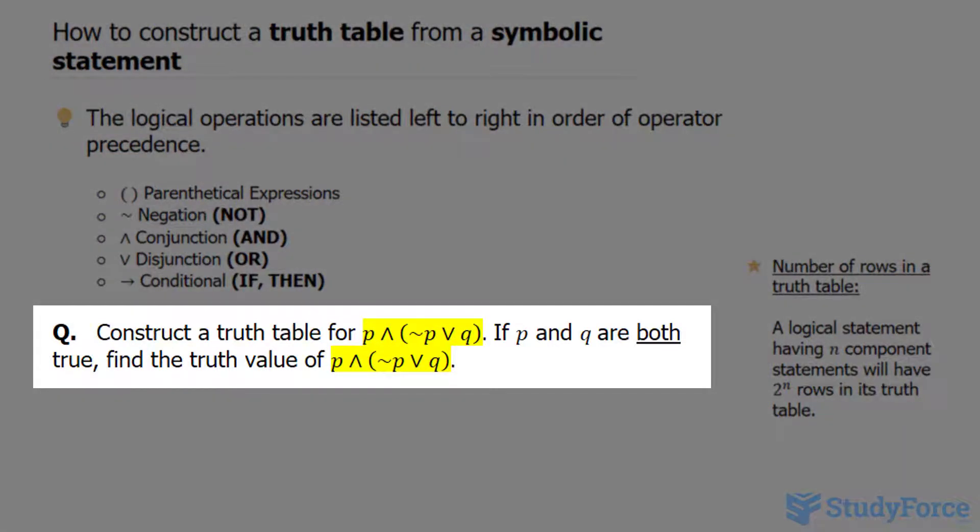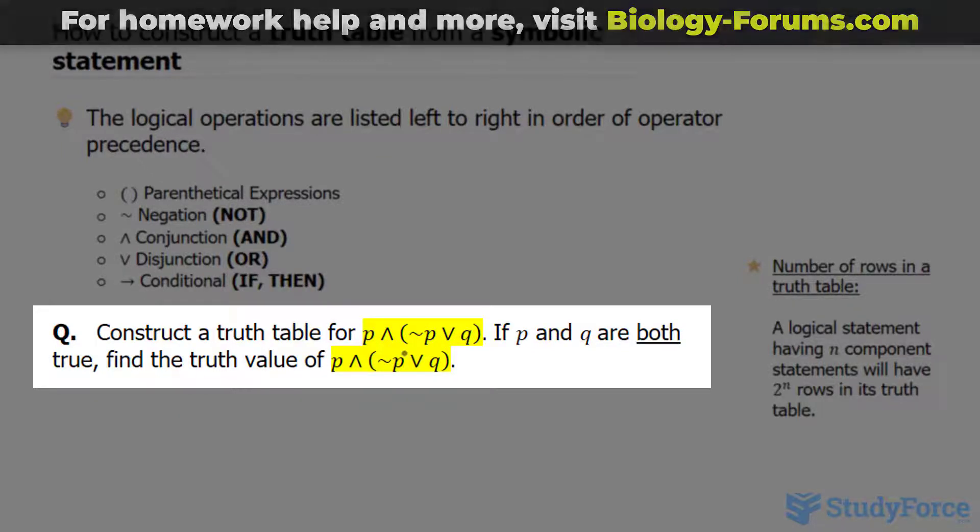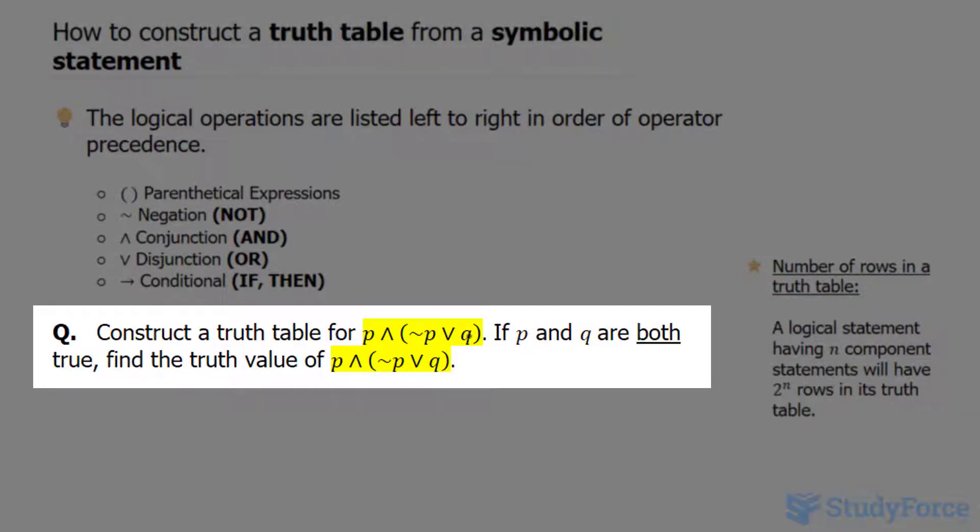Our question reads: construct a truth table for the statement p ∧ (¬p ∨ q). If p and q are both true statements, find the truth value of p ∧ (¬p ∨ q).